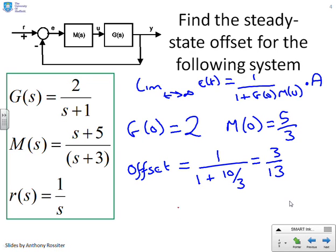Clearly, you can see this is non-zero. So this loop diagram, the output will not track the target. And the offset is quite big. 3 over 13 is quite a reasonable number. It's going to be of the order of 20%. So that's not satisfactory at all.